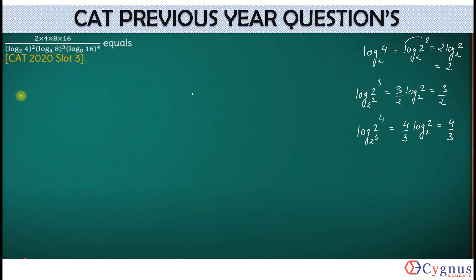So we have simplified the denominator. Let's put the values numerator. Numerator is 2 into 4 into 8 into 16. What's the denominator?